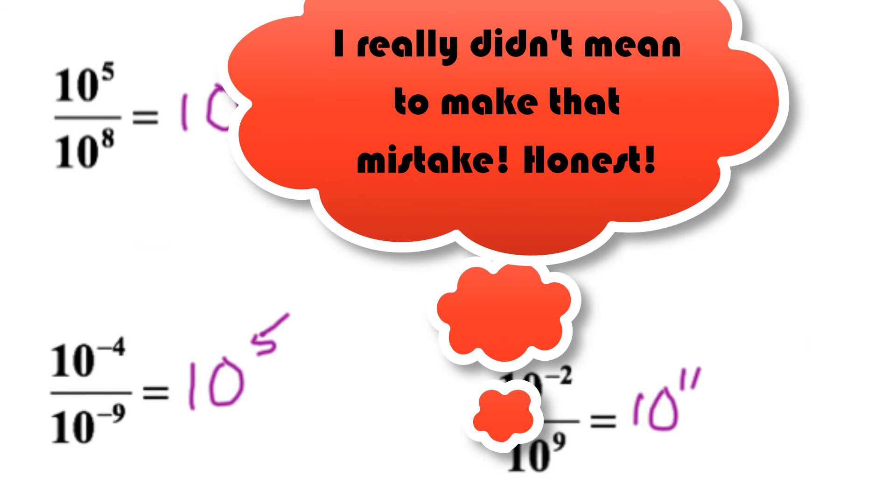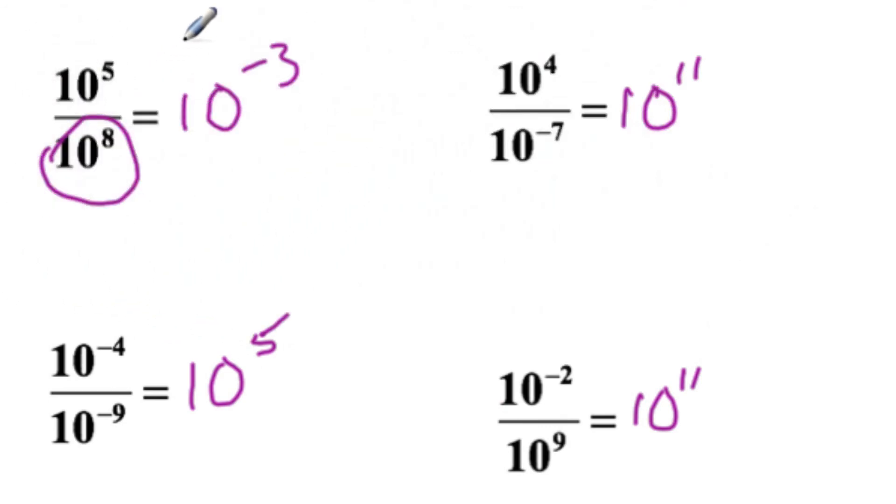Habit of mind, do our answers make sense? Well, when you divide by a number greater than one, then your result ought to be smaller than your numerator. When you divide by a number less than one, your result ought to be greater than the numerator.